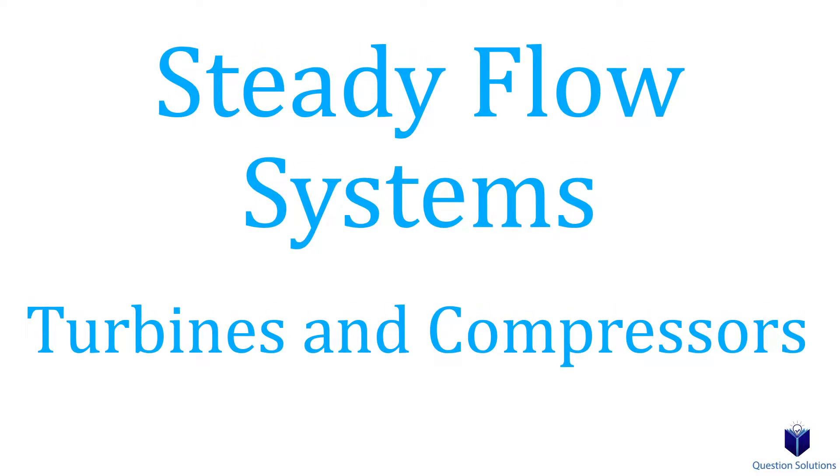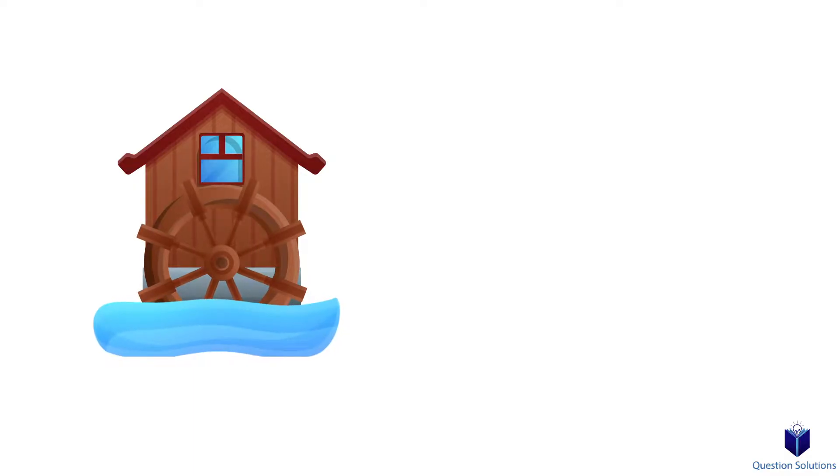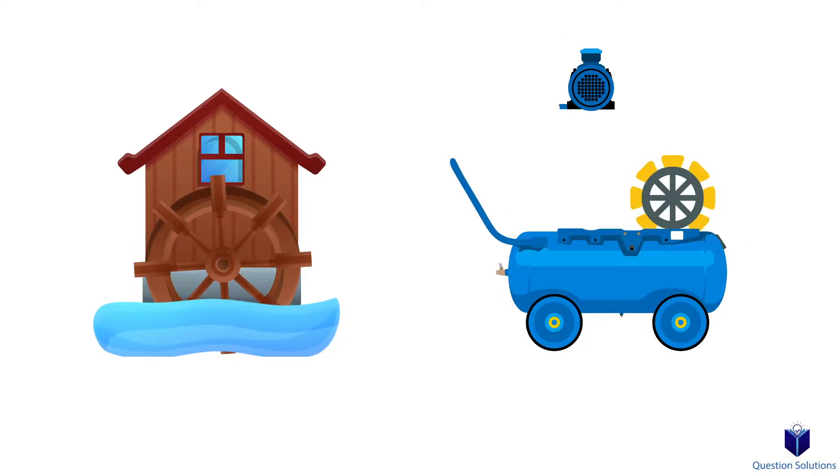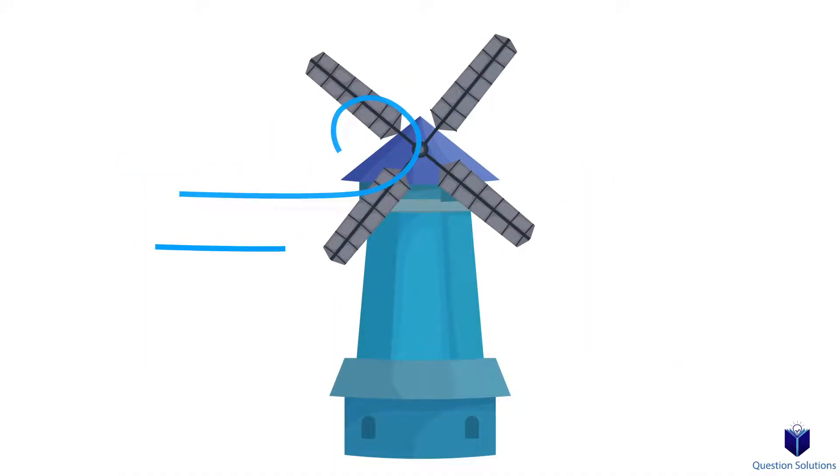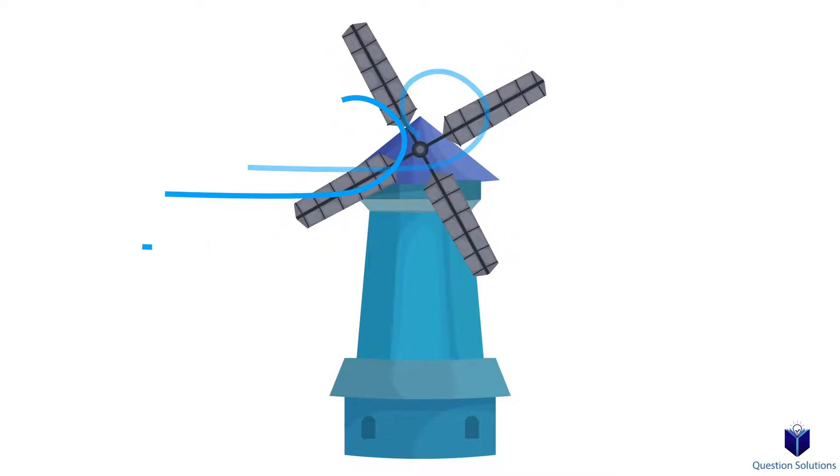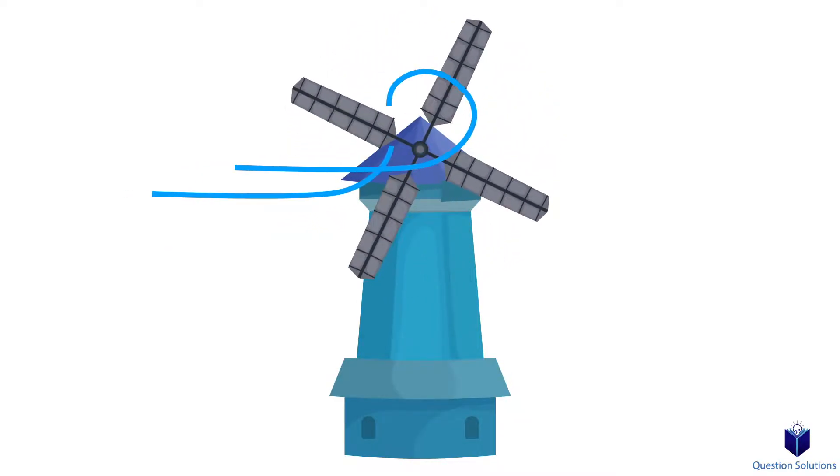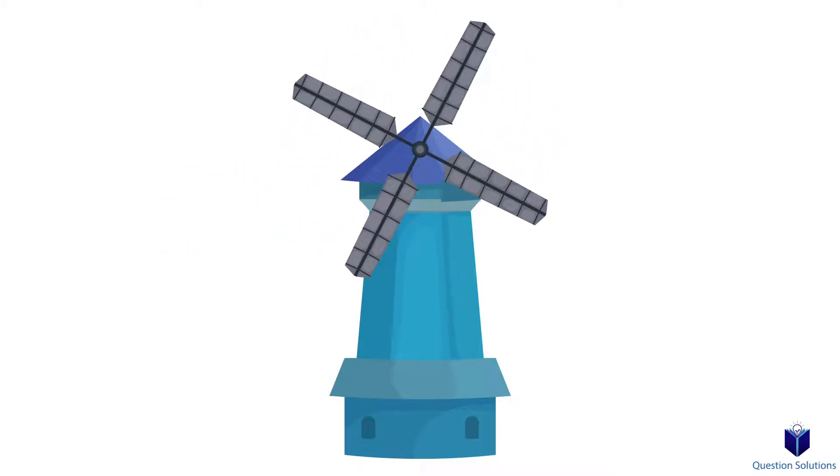Let's talk about turbines and compressors. In the previous video, we discussed what a steady flow system is, so we're going to build on that knowledge by focusing on turbines and compressors. In a turbine, fluid will flow through and do work against the blades.